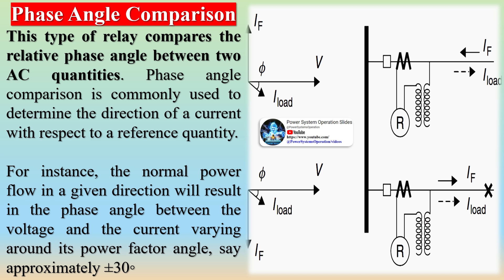Alternatively, one could form an algebraic sum of the two currents entering the protected winding, I1 minus I2, and use a level detector relay to detect the presence of a fault. In either case, the protection is termed a differential protection.